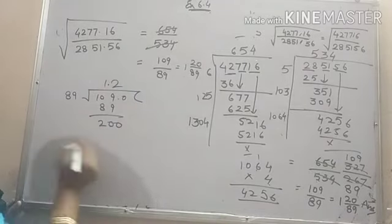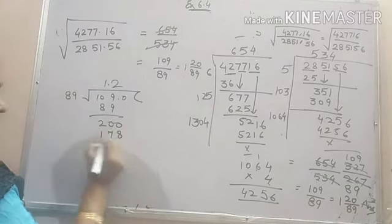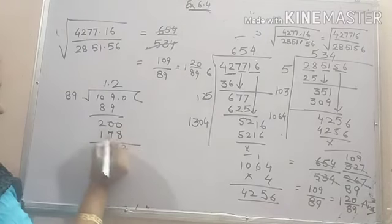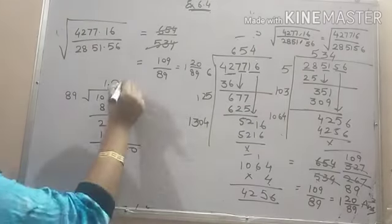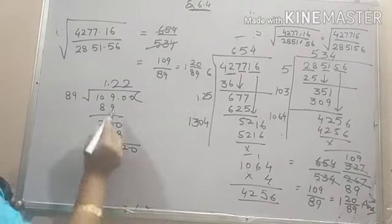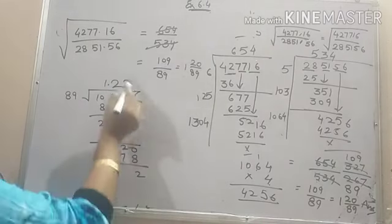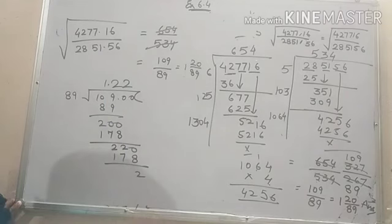2 times, it will go. It will be 178. 2. 22. Again 0. Again it will go on 2, 178.